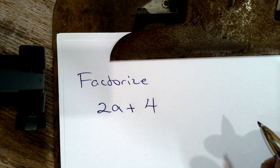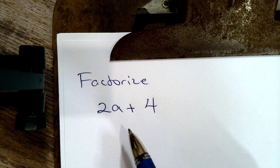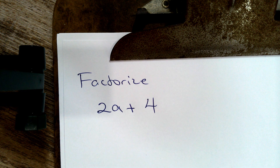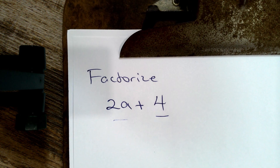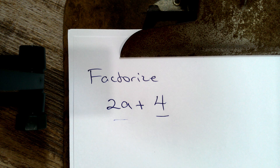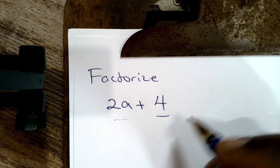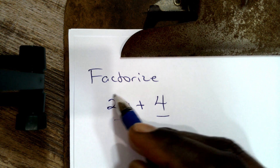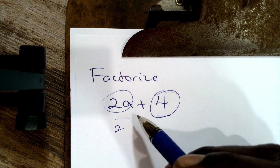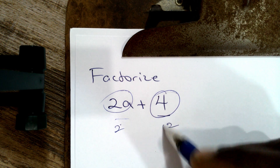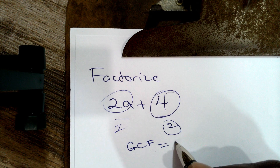The first thing we have to look at is: what is the greatest common factor between all components of this expression? So if you analyze 2a and 4, what is the greatest common factor? That would actually be 2, because the greatest factor that could fit into both 2a and 4 is 2. So the GCF is equal to 2.